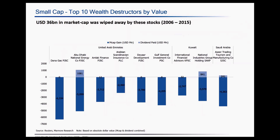In this slide, we have identified the top 10 wealth destructors in terms of value. Dana Gas, which is a UAE-based company, leads the group. It has destroyed close to about 6 billion in wealth in terms of market cap. Dana Gas, along with Adar Development and Gulf Investment, are the three companies which have paid absolutely no dividends to their investors.